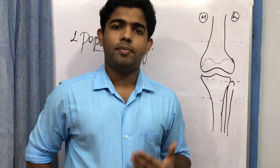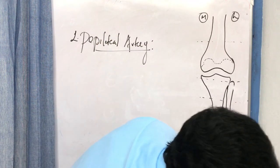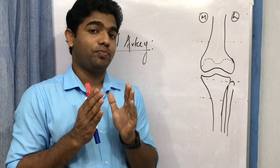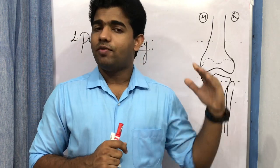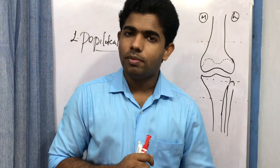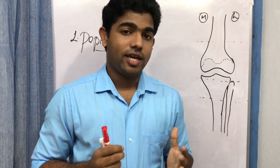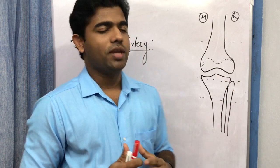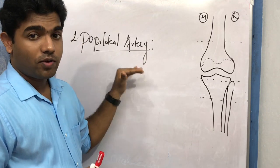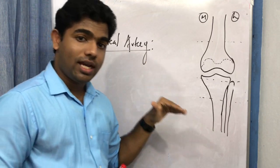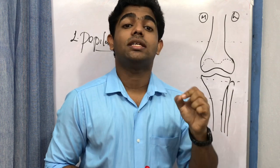The major artery of the thigh region is the femoral artery. The popliteal artery is in fact the continuation of the femoral artery — which we studied when discussing the femoral canal, adductor canal, and anterior thigh muscles.